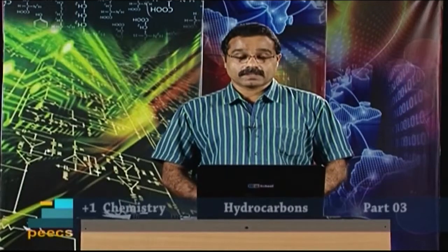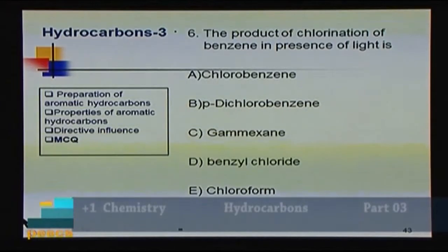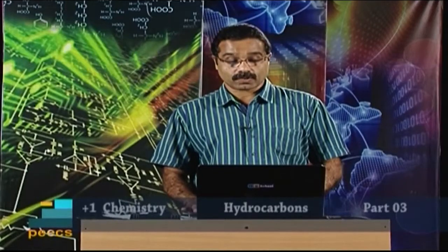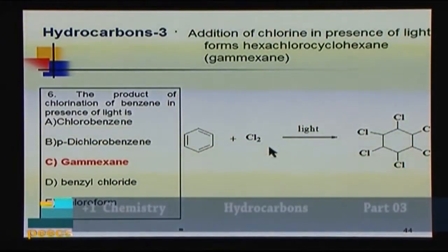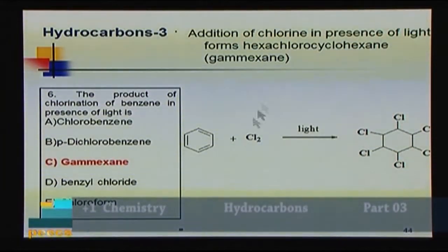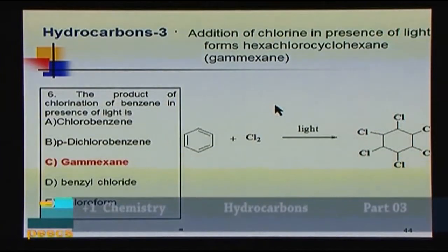Question 6: The product of chlorination of benzene in the presence of light is: A) chlorobenzene, B) para-dichlorobenzene, C) gammexane, D) benzyl chloride, E) chloroform. In the presence of light, the reaction is addition of chlorine to benzene. Addition of three molecules of Cl₂ to the three double bonds gives hexachlorocyclohexane — that is gammexane (BHC). Answer: C.